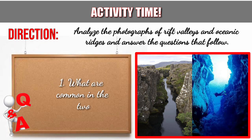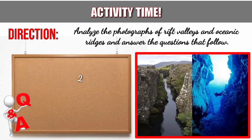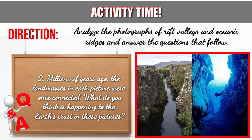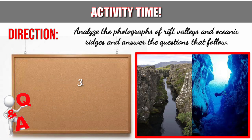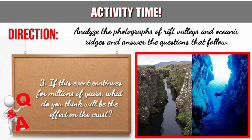Number 1: What are common in the two pictures? Number 2: Millions of years ago, the land masses in each picture were once connected. What do you think is happening to the Earth's crust in these pictures? Number 3: If this event continues for millions of years, what do you think will be the effect on the crust?